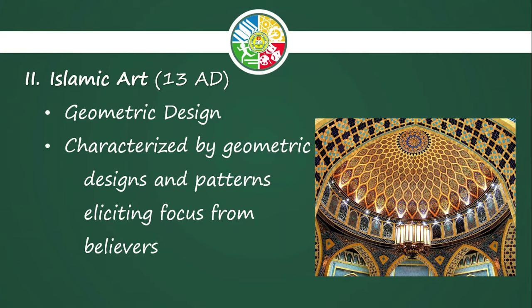Next, we have the Islamic era. The nature of Islamic art is geometric design. If you have noticed with our Muslim brothers and sisters — particularly in their attire and their mosques — geometric designs are very prominent. The best example is the malong. It is characterized by geometric designs and patterns that elicit focus from believers.